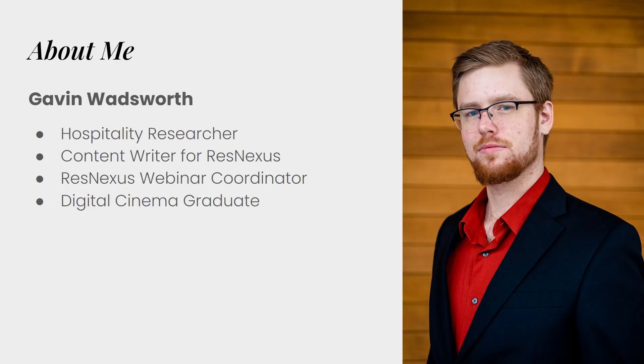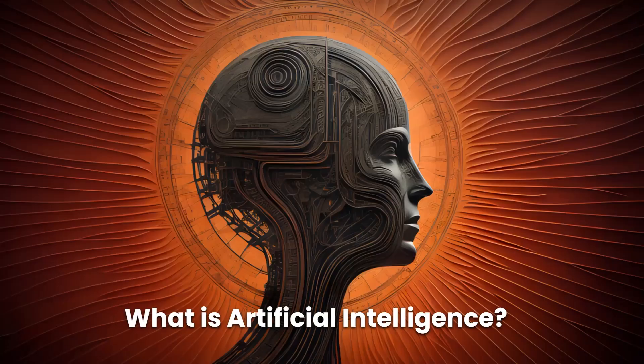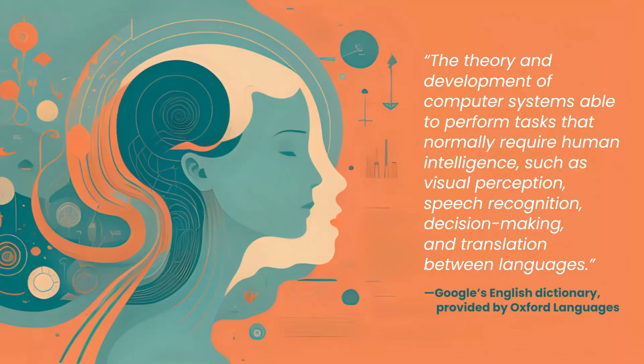But let's go ahead and move on to the topic of today's webinar. So, what is AI, or artificial intelligence? Let's start by defining the term. Google defines artificial intelligence as the theory and development of computer systems able to perform tasks that normally require human intelligence, such as visual perception, speech recognition, decision making, and translation between languages.